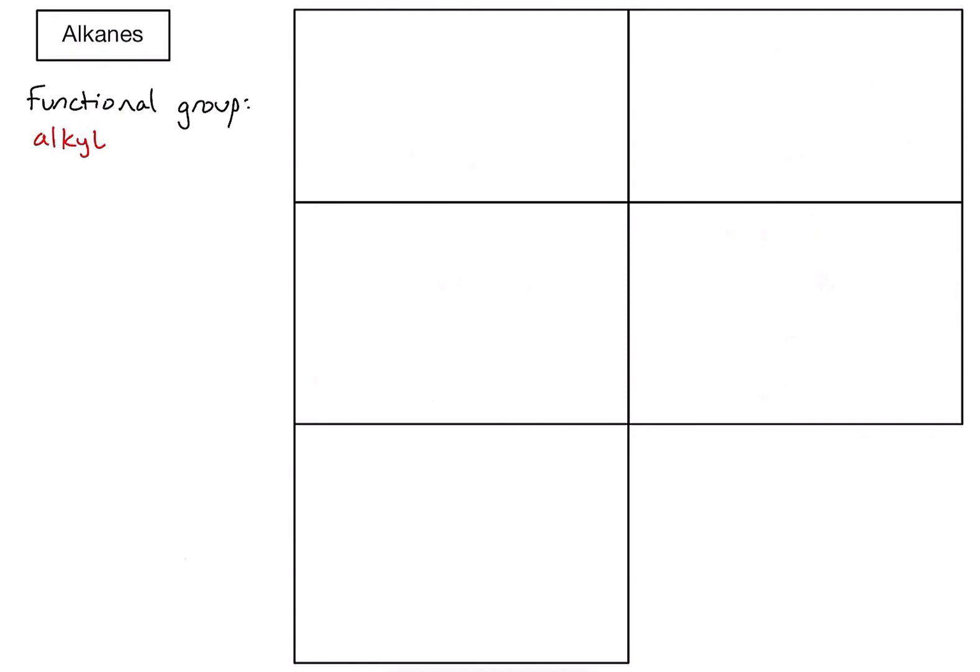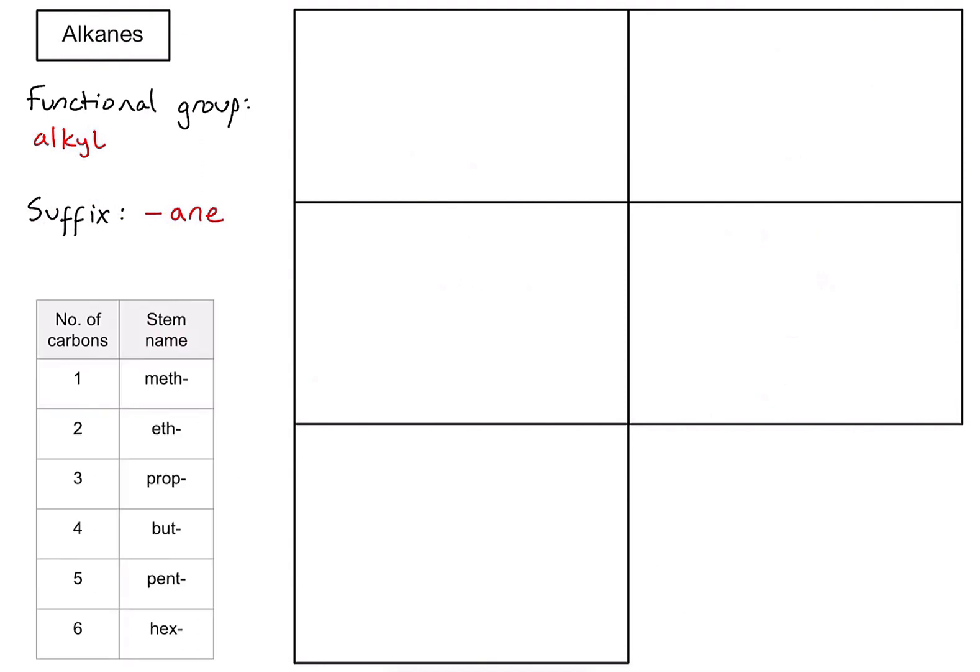For any compounds that contain only those things, the suffix or the end of the name is always going to end with -ane. An important part of naming organic compounds is to know how many carbons are in our main chain, so let's bring up that little list which gives the number of carbons and the stem, the central part of my name that relates to that number.